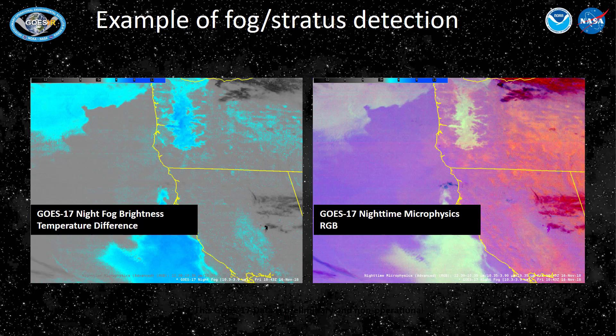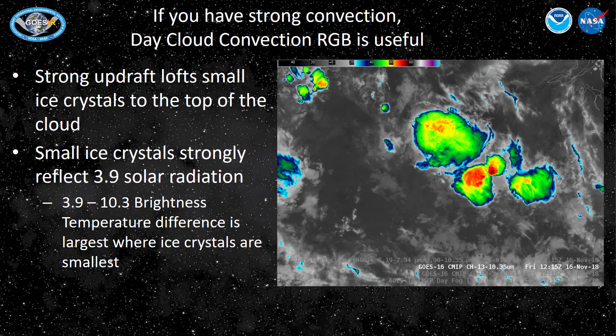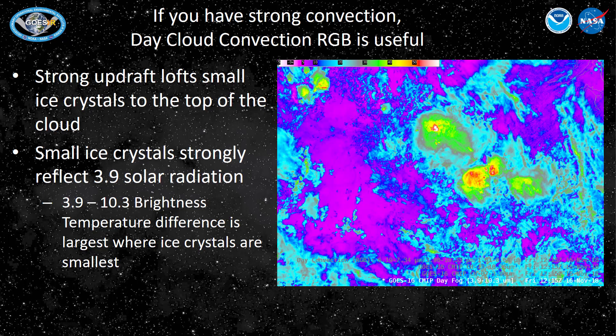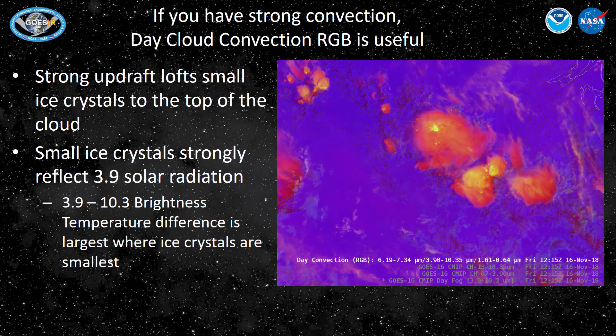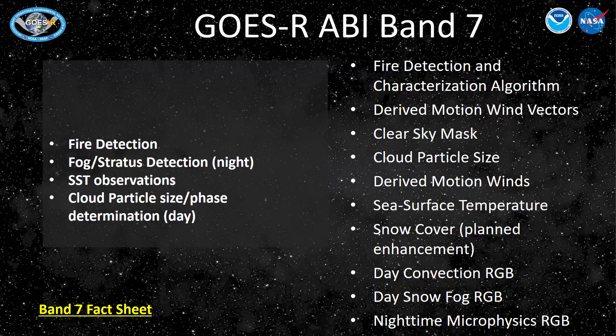Regions of low clouds stand out pretty well. The shortwave infrared at 3.9 micrometers has the best detection capabilities of low-level thermal gradients, as shown by an example of the north wall of the Gulf Stream. Solar reflectance at the top of convection during the daytime is a function of cloud particle size or size of the ice crystals. The difference field between the 3.9 and 10.3 micrometer channels will have a strong positive value where ice crystals are very small, and that is used in the day convection RGB to highlight regions of intense convection. You can click the link for a Band 7 fact sheet.